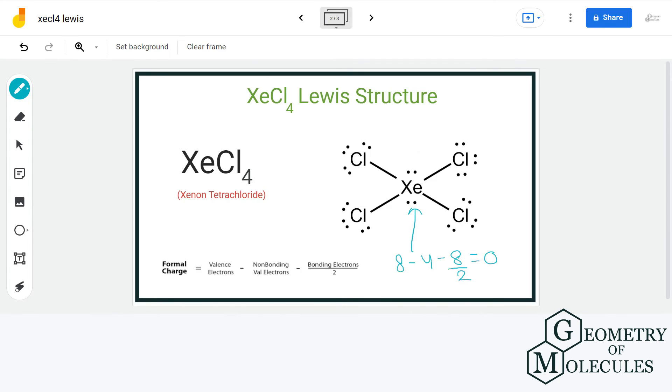For chlorine, we have 7 valence electrons minus 6 non-bonding electrons minus 2 bonding electrons divided by 2 that gives us a formal charge of 0.